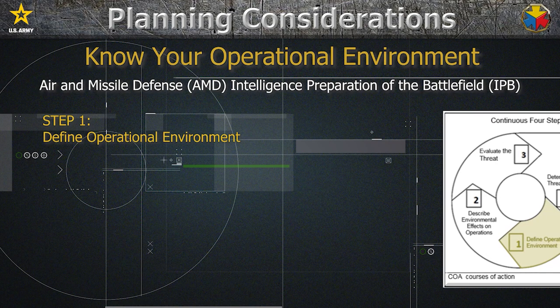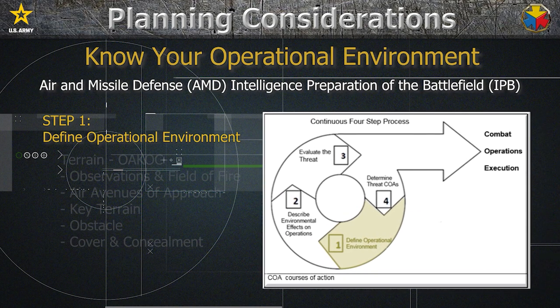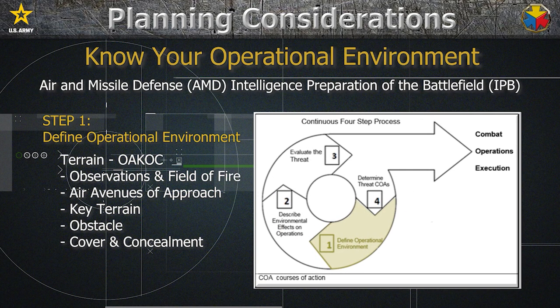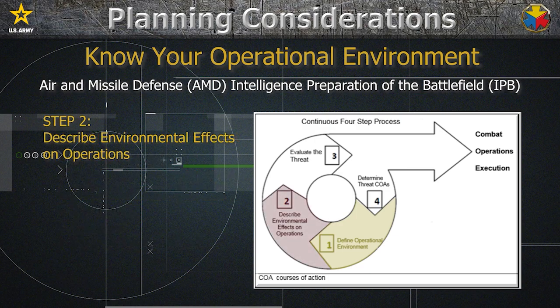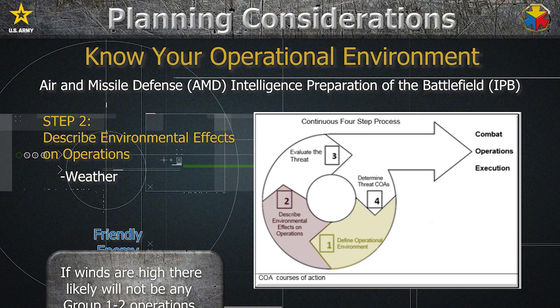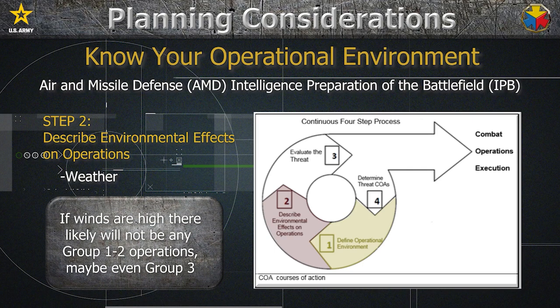The first step is to define the operational environment. We do this first by looking at the terrain, identifying the likely air avenues of approach, and then putting this all over the Modified Air Corridor Use overlay, or MACU. Step 2 is to define environmental effects. Things such as weather will affect operations by aerial platforms, both friendly and enemy. For example, if winds are high, it is likely that there will not be any Groups 1 or 2 UAS operations.